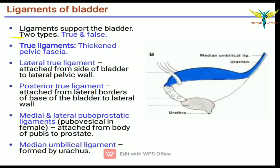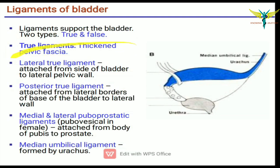Coming to the ligaments of the bladder — ligaments give support to the bladder and are of two types. The true ligaments are formed by thickened pelvic fascia. There are four types: the lateral true ligament, posterior true ligament, medial and lateral puboprostatic ligaments, and the median umbilical ligament.